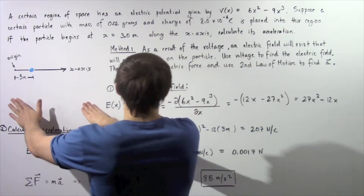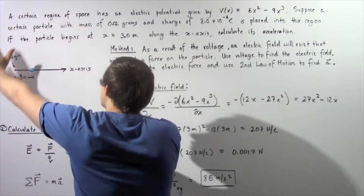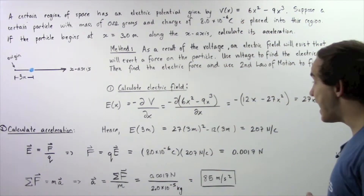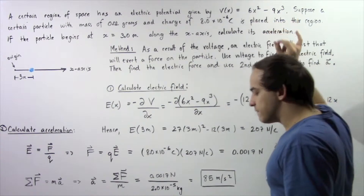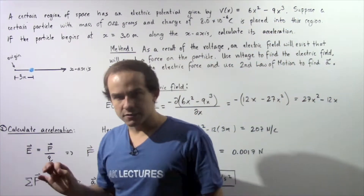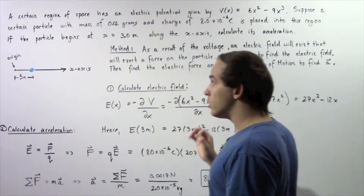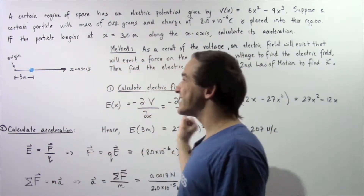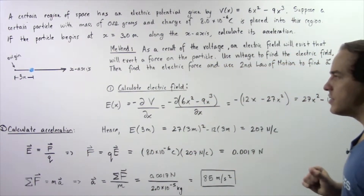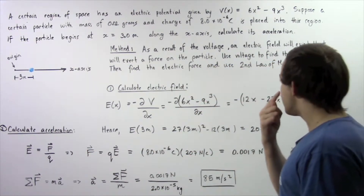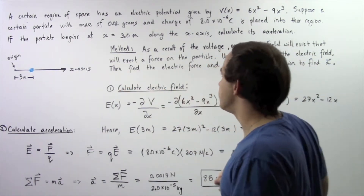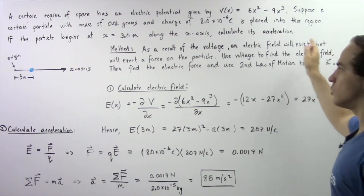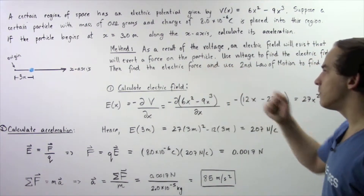Let's begin by looking at the following diagram. This is our region of space where the voltage is given by this equation. As a result of this voltage, we're going to have an electric field, and that electric field will create an electric force that will act on our particle and accelerate it. To solve our example, we essentially want to follow the following method: as a result of the voltage, an electric field will exist that will create an electric force on the particle.